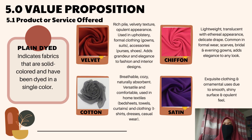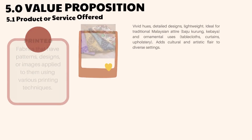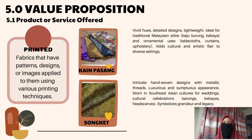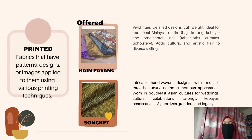Satin is a smooth, shiny fabric used for garments, wedding wear, and ornamental purposes, giving a luxurious feel and appearance. The next fabric category is printed — fabrics that have patterns, designs, or images applied to them using various printing techniques. There are two materials under printed: kain pasang and songket. Kain pasang features vibrant colors and intricate lightweight designs, perfect for traditional clothing, baju kurung, kebaya, and decorative uses. Songket is a luxurious hand-woven fabric with metallic threads, worn in South Asian cultures for weddings and cultural celebrations.